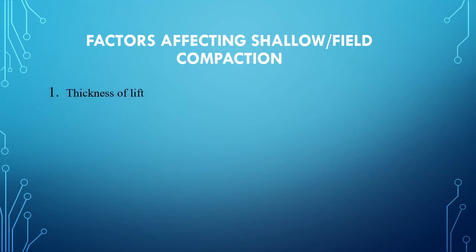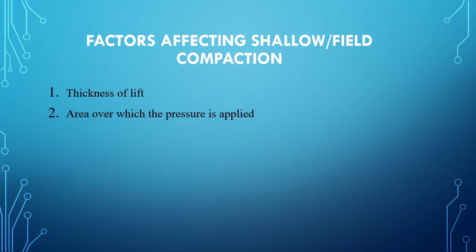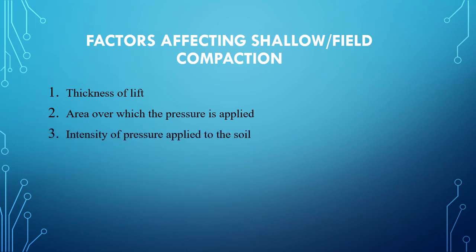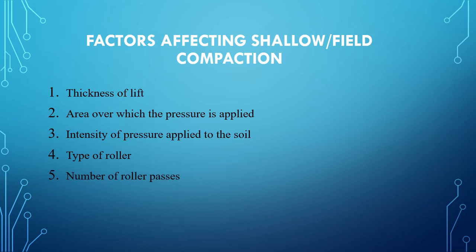The factors affecting field compaction are: first, the thickness of lift; second, the area over which the pressure is applied; third, the intensity of pressure applied to the soil; fourth, the type of roller; and fifth, the number of roller passes.